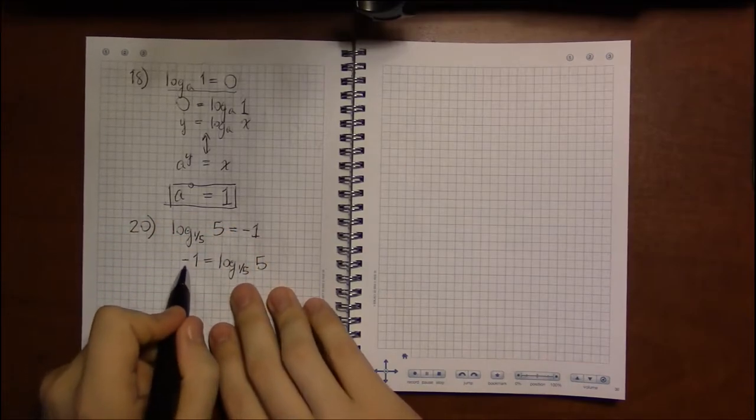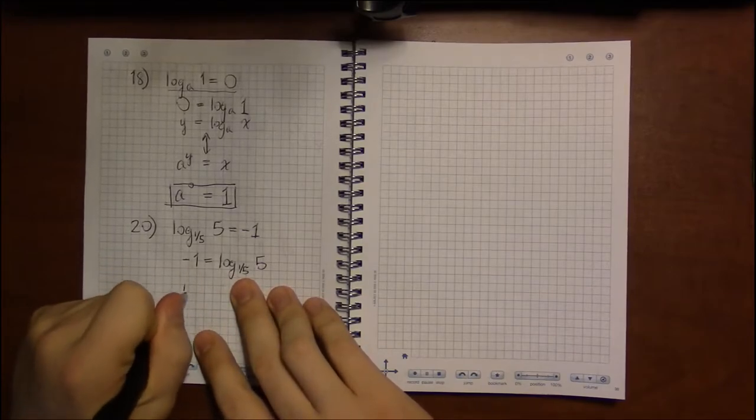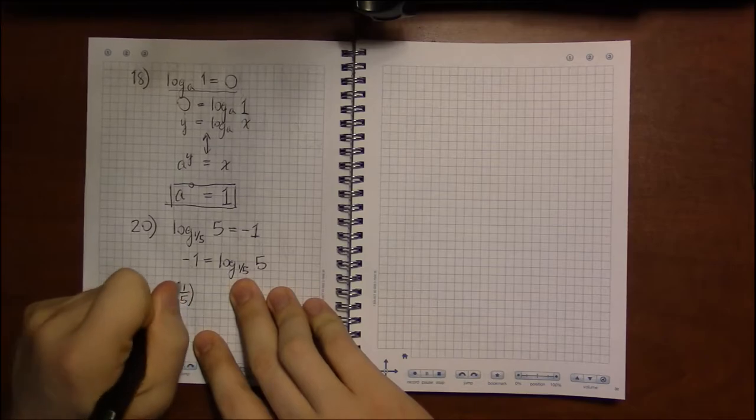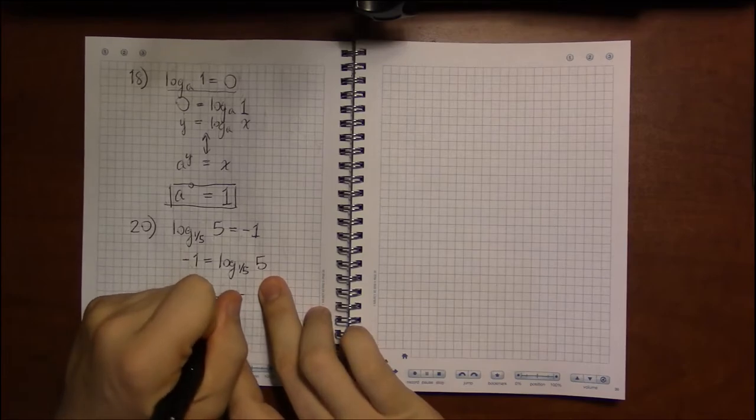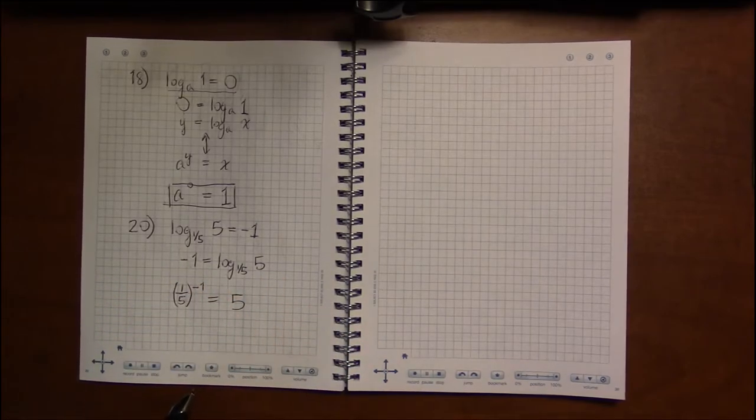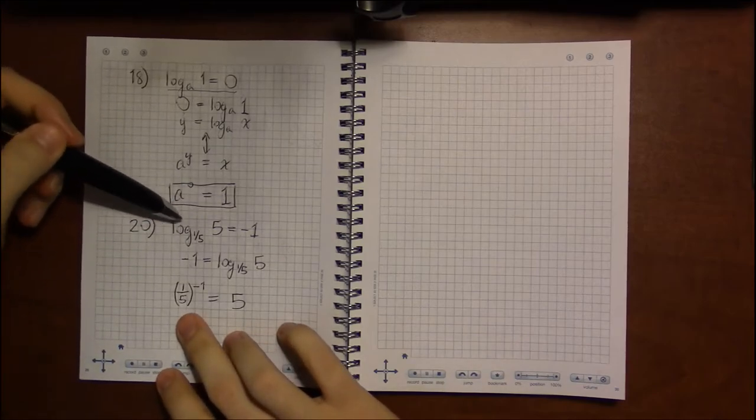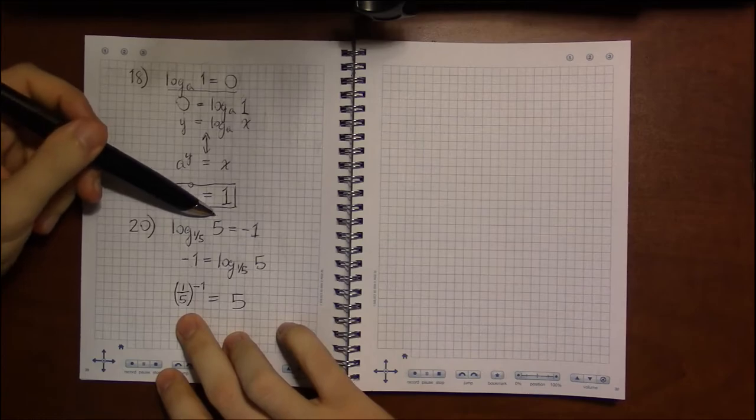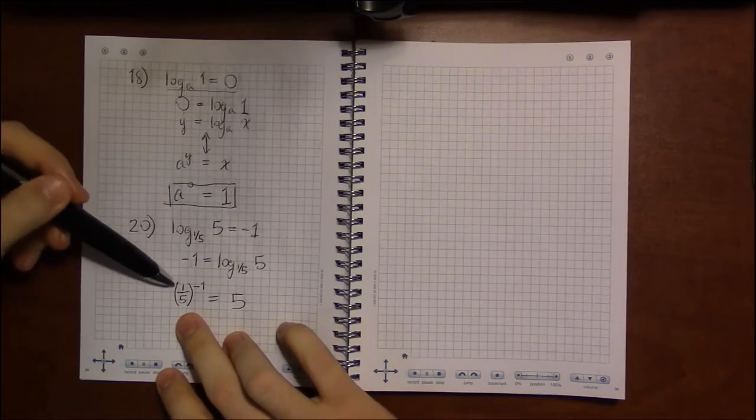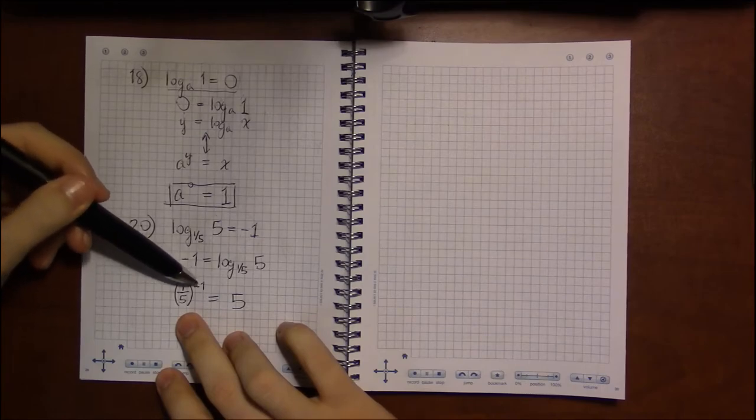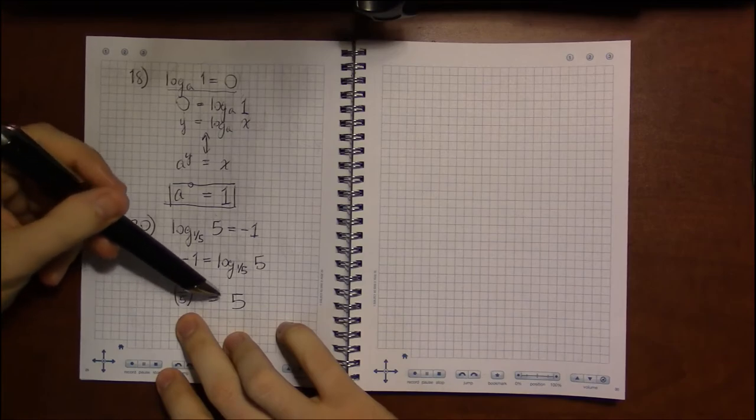Then we're going to end up flipping the first two numbers. So it's going to be one-fifth to the negative 1, and that's going to equal the last number, 5. So saying log base one-fifth of 5 is equal to negative 1 is the same thing as saying one-fifth to the negative 1, and the reciprocal of one-fifth is 5.